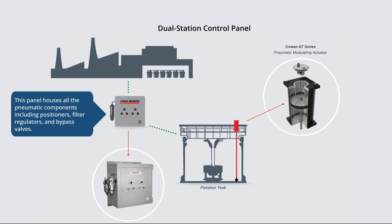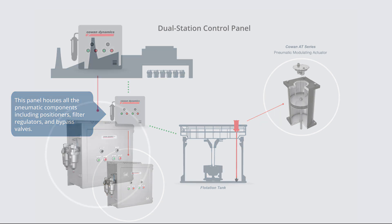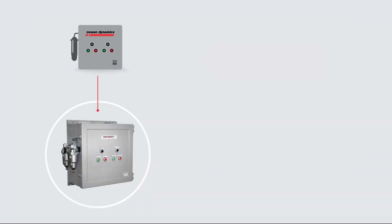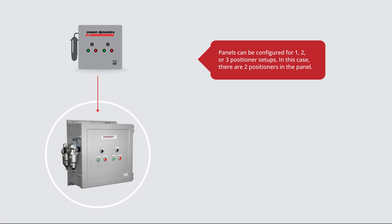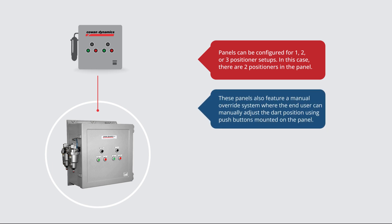Cowan's control panel houses all the pneumatic components including positioners, filter regulators, and bypass valves. Panels can be configured for one, two, or three positioner setups. In this case, there are two positioners in the panel. These panels also feature a manual override system where the end user can manually adjust the dart position using push buttons mounted on the panel.